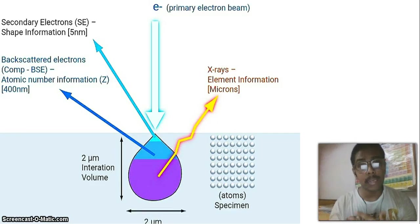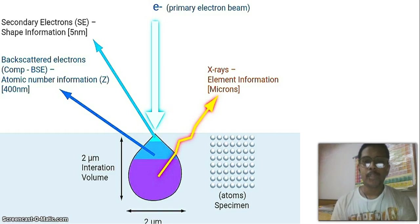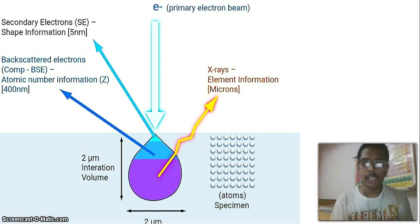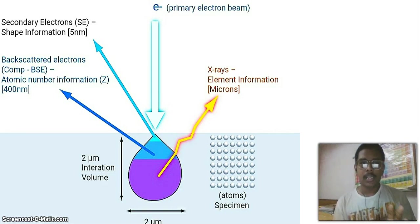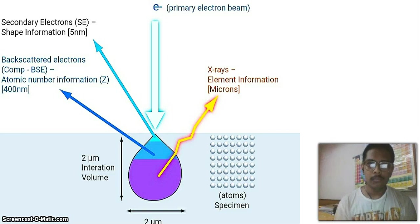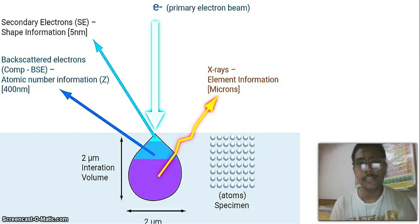Taking reference from my other video on SEM: whenever an electron beam comes onto the surface of a specimen and hits it, two main types of collisions can happen. One is elastic scattering and another is inelastic scattering. Elastic scattering will generate backscattered electrons, and inelastic scattering will generate secondary electrons. These two types of electrons are important for image formation in scanning electron microscopy.